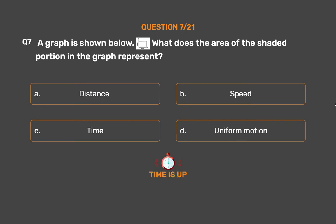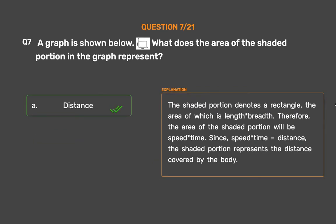The correct answer is Option A: Distance. The shaded portion denotes a rectangle, the area of which is length times breadth. Therefore, the area of the shaded portion will be speed times time. Since speed times time equals distance, the shaded portion represents the distance covered by the body.